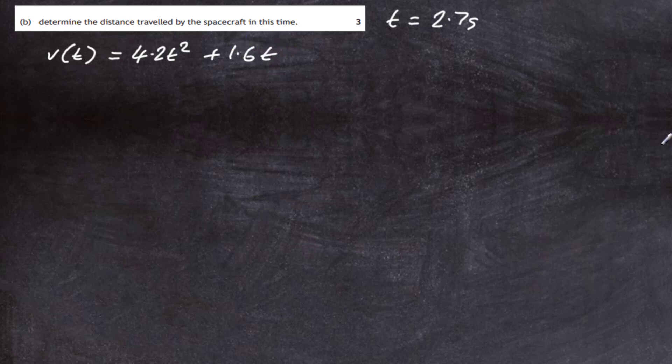Now from our calculus we know that the velocity of any object is equal to the rate of change of displacement s, ds by dt. So we can equate ds by dt equal to 4.2t squared plus 1.6t.